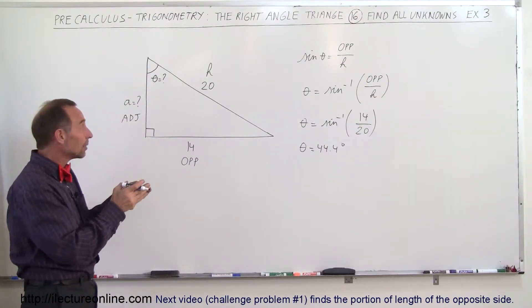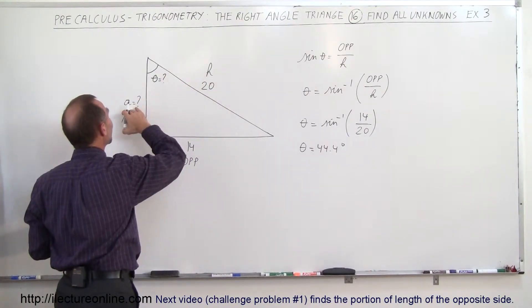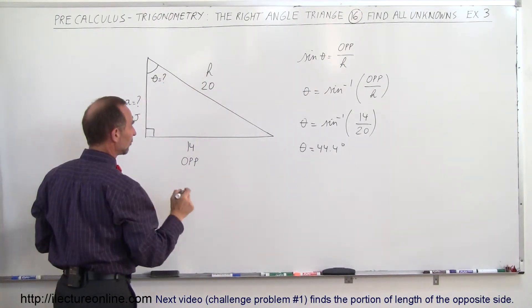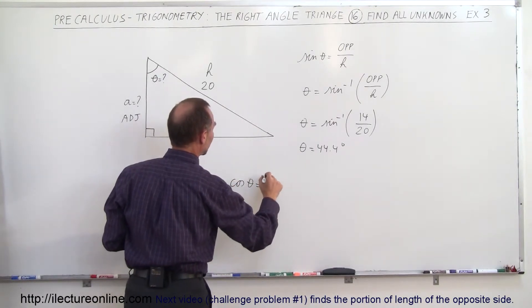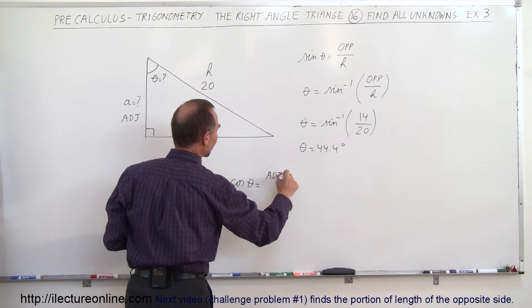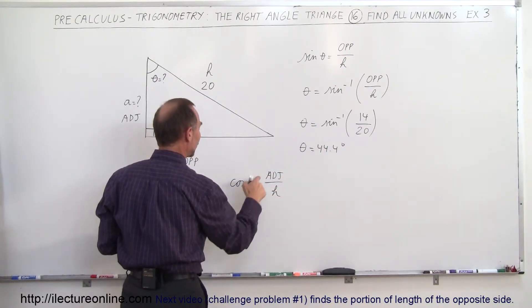Once we have the angle, that makes it fairly easy. We know the hypotenuse, we want to know the adjacent side, and we know the angle. Therefore we can use the cosine, because cosine of theta equals the ratio of the adjacent side divided by the hypotenuse.